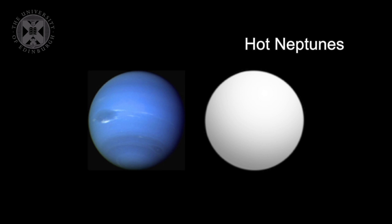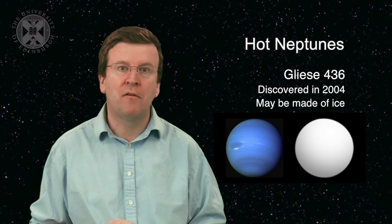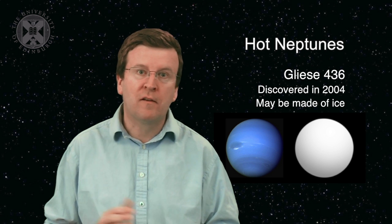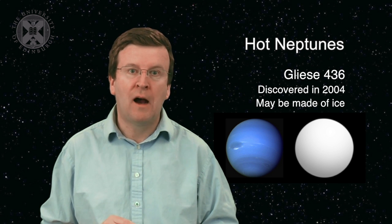Another type of planet that's been discovered are called hot Neptunes. These are planets that orbit very close to their star, but they have a mass more similar to Neptune or Uranus than Jupiter. The first one of these planets was discovered in 2004, called Gliese 436, and it orbits its star every two days and fifteen hours.